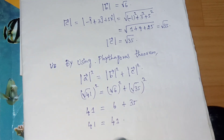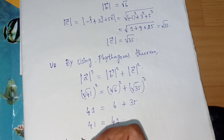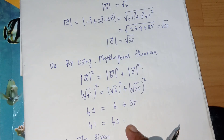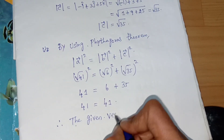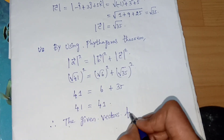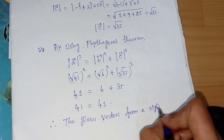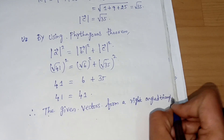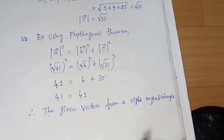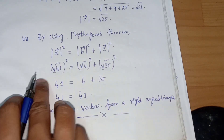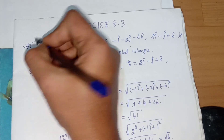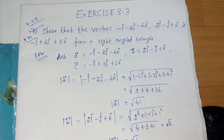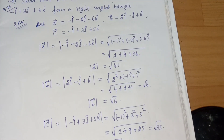Therefore, the given vectors form a right angle triangle — proved using Pythagorean theorem. This is a very, very important 5-mark question. Thank you. Please subscribe to Harimax channel. Any doubts, please comment.